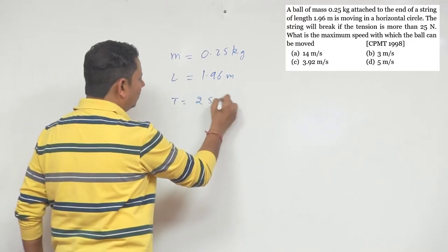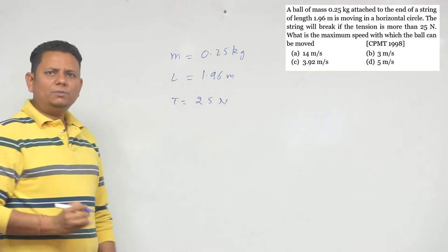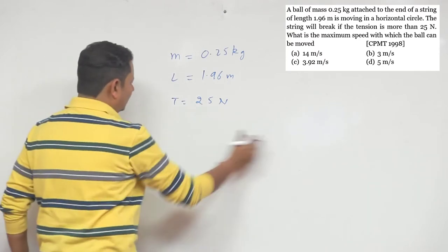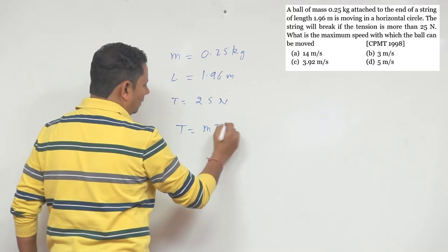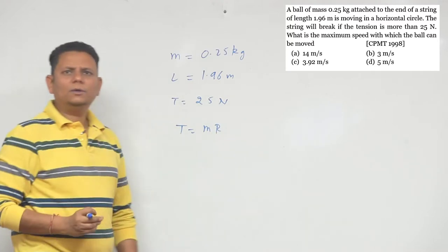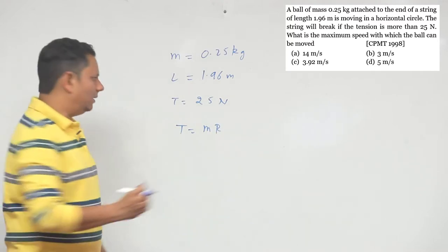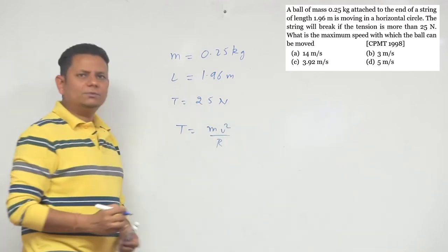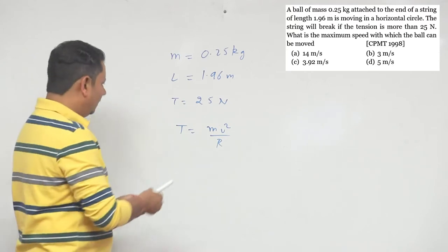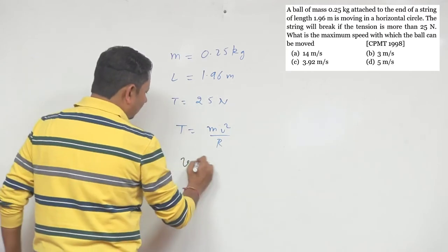In this case, the tension can be written as tension equals m r omega square. We need to find the speed, so tension can be written as m v square by r. Based on this, we can find the velocity value.